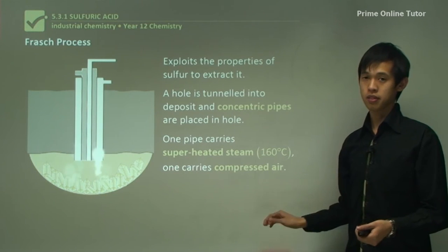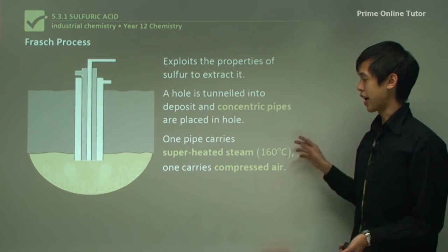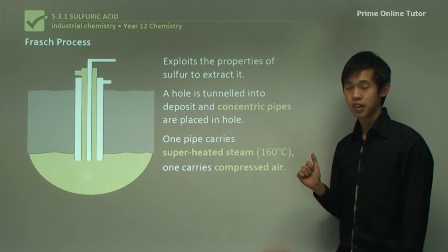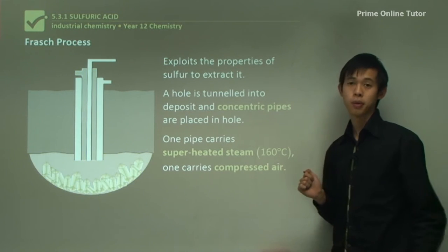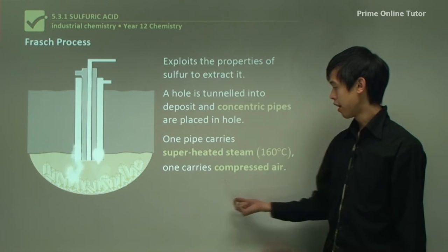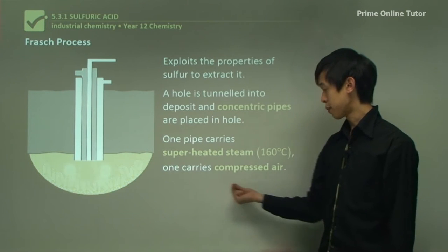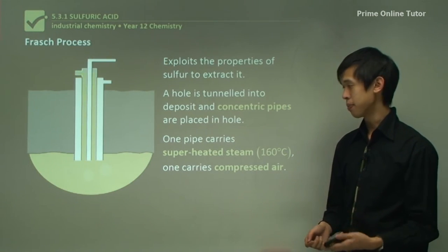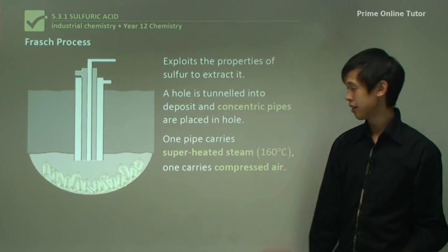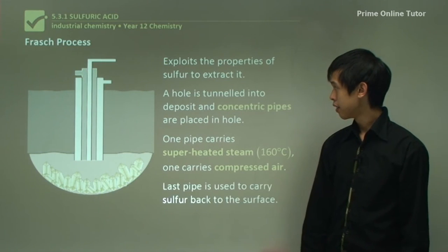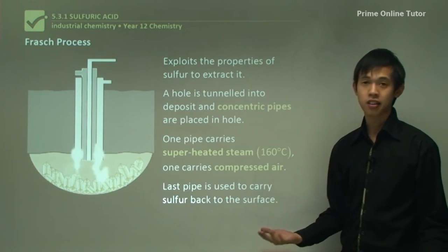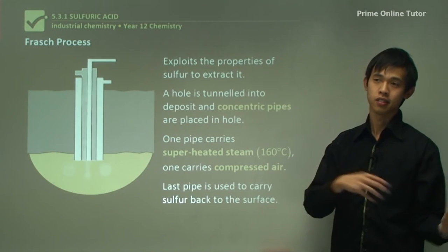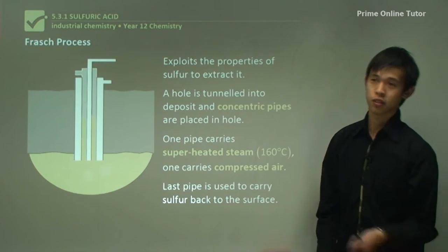One of those pipes carries superheated steam at 160 degrees Celsius — remember that's higher than the melting point of the sulfur. Another pipe carries compressed air. And the last pipe carries the sulfur back in the opposite direction, up to the ground and out to wherever we want it.